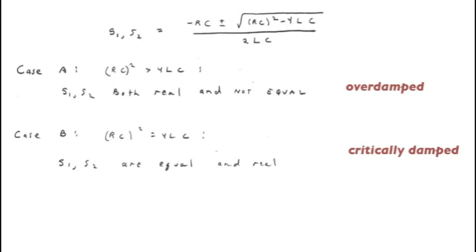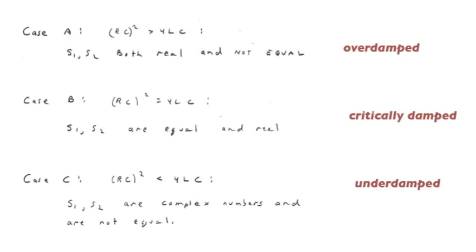A second possibility is that RC squared equals 4LC. In that case, the square root vanishes, s1 and s2 are equal to one another and are real numbers. This circuit is said to be critically damped. A third possibility occurs when RC squared is less than 4LC, corresponding to an RLC circuit with a smaller value of r. Now s1 and s2 have both real and imaginary components. They are complex numbers. This is called an underdamped circuit.